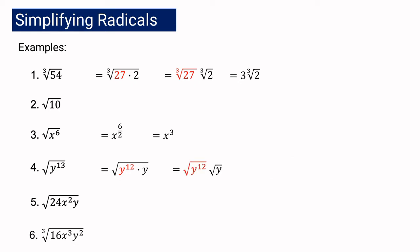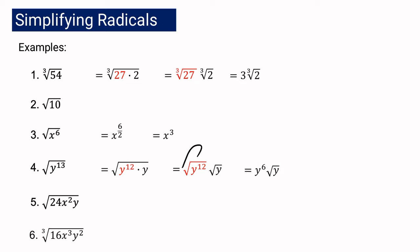If we simplify by applying law of radicals, we divide 12 by 2 to get y to the 6th. Then we copy the square root of y, since exponent 1 is already less than the index 2 and cannot be simplified further. So our final answer is y raised to the 6th times the square root of y.